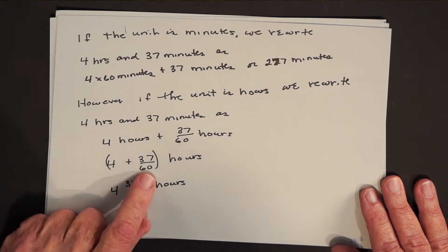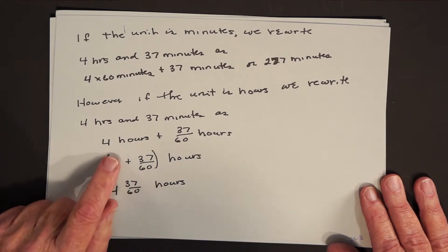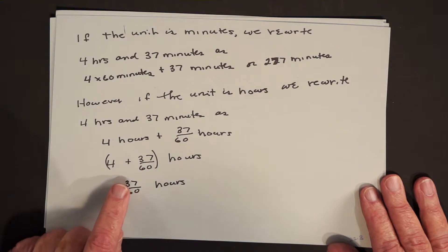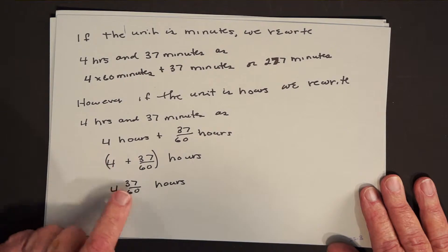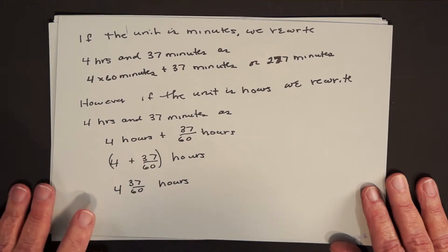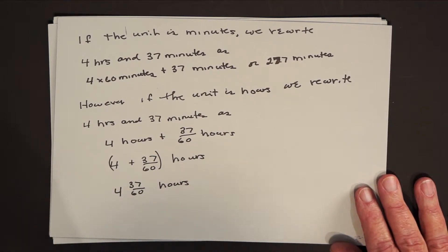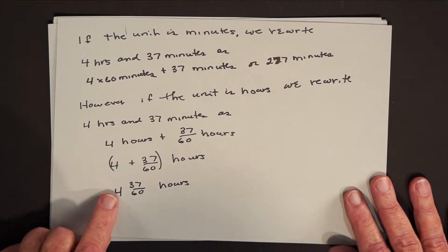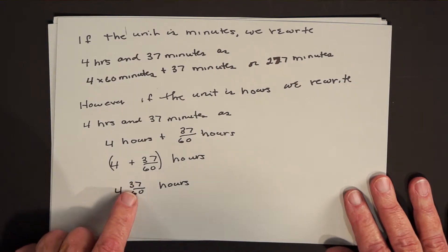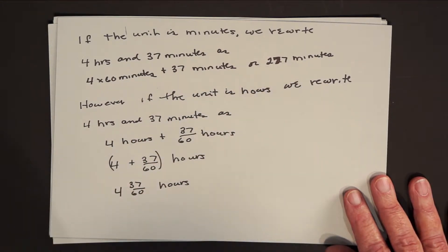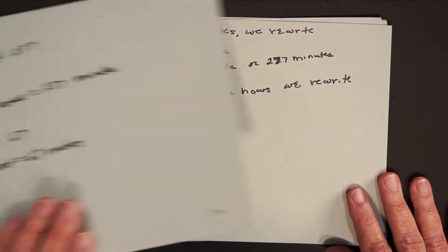And then what we do when we deal with mixed numbers, and it can be somewhat confusing at the beginning, but we simply leave out the plus sign. When we write 4 and 37 sixtieths hours, it's really 4 plus 37 of what it takes 60 of to make another hour. And be very careful here how the adjective and noun theme comes in. The 4 and 37 sixtieths is modifying hours, and the 277 is modifying minutes. They both describe the same amount of time.